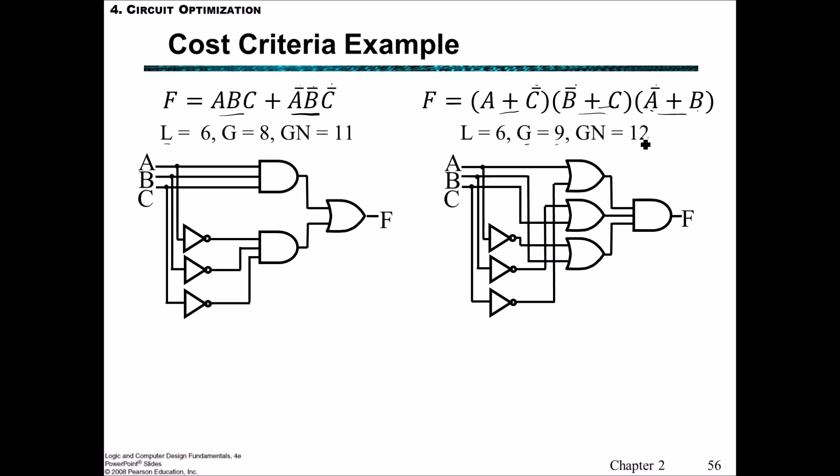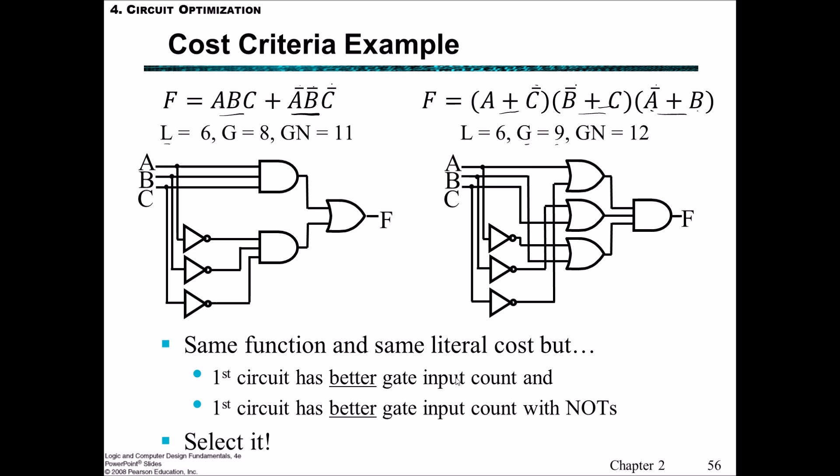So when comparing those two, even though the number of literals is six in both examples, in fact this first one is better because it has a smaller gate input count and a better gate input count when we include the NOTs. So this is the one that you should select.